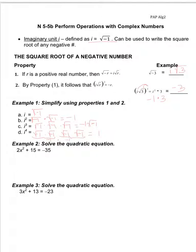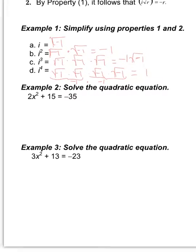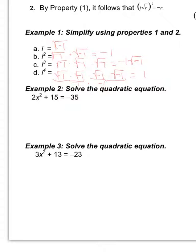Now we're going to solve a quadratic equation using the square root method on two examples. Notice the x term — the middle term — is missing. First, subtract 15 to get x squared by itself, giving us 2x squared equals negative 50. Then divide by 2, so x squared equals negative 25. Take the square root of both sides — remember, using the square root method gives us a positive and negative answer.